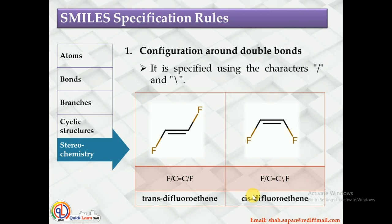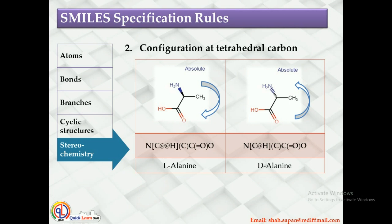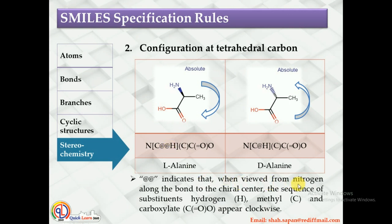With SMILES notation you can also represent the configuration around a double bond. To represent configuration at a tetrahedral carbon, you use the '@' symbol. Two '@' signs indicate that when viewed from the nitrogen along the bond to the chiral center, the sequence of substituents — hydrogen, methyl, and carboxylate — appears clockwise, giving L-alanine. A single '@' indicates the sequence appears anticlockwise, giving D-alanine. In this way you can represent the stereochemistry of a compound.